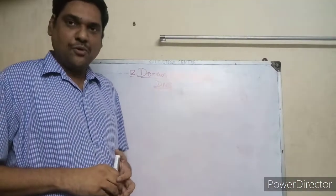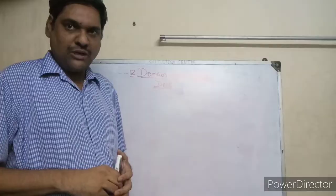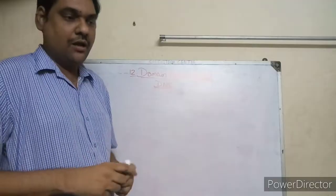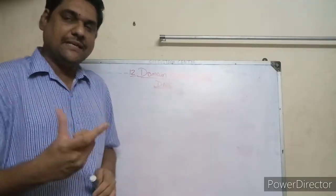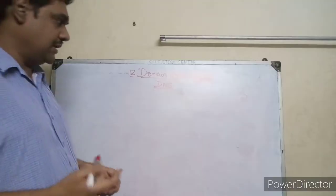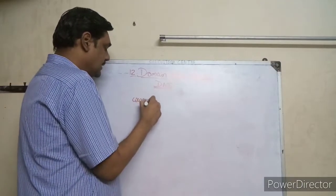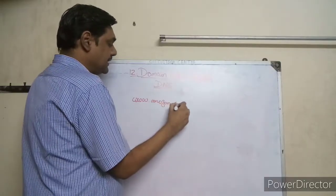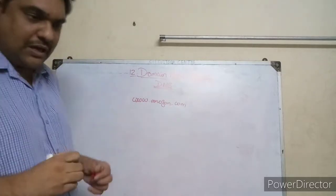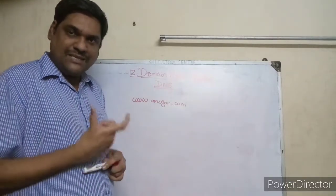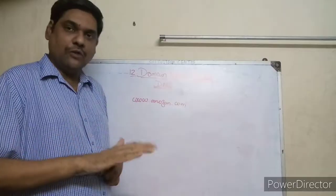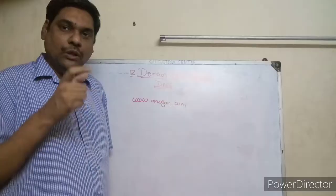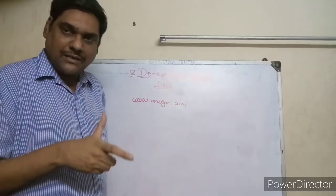Hello children, today we are going to see about a new chapter called DNS — Domain Name System. In the domain name system, you can have a website name and type it, for example like Google, or point to www.amazon.com. On a computer, you type the website name and it converts to an IP address. From the last chapter, each computer on a network has a unique number assigned — an IP address.